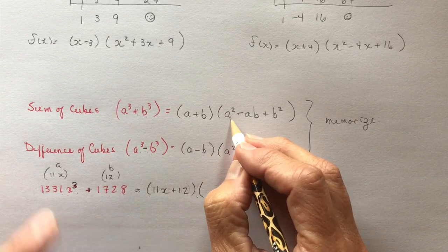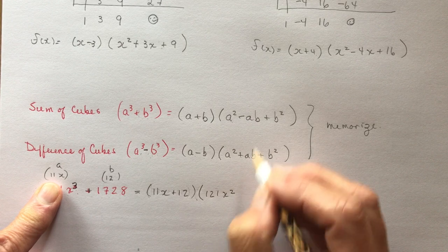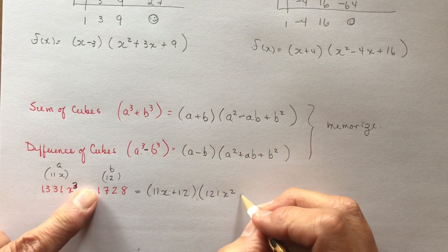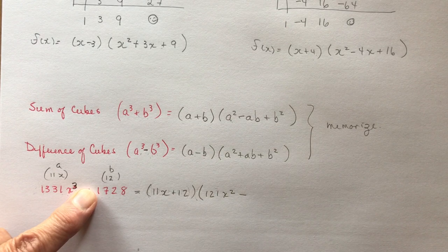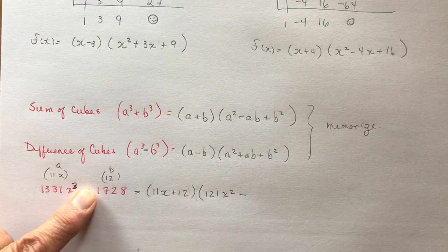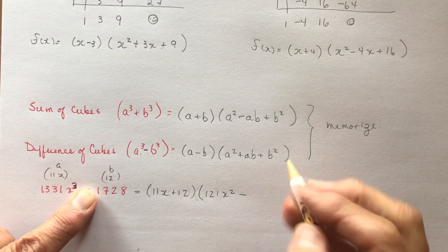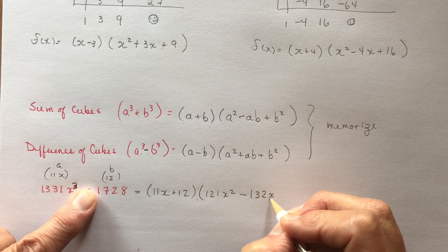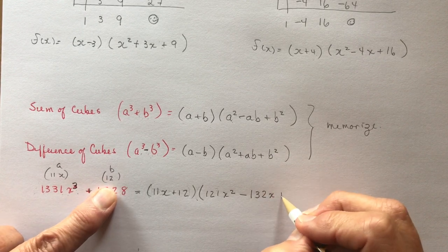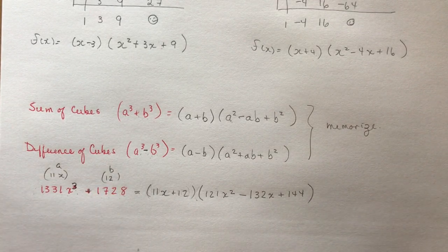Now I want a squared. So that's 121x squared minus a times b. So minus, ooh, I don't know what 11 times 12 is. I'm going to find my calculator fast. 11 times 12. Hmm. 132. Minus 132x. And square b, 144. There you go. It's that easy.